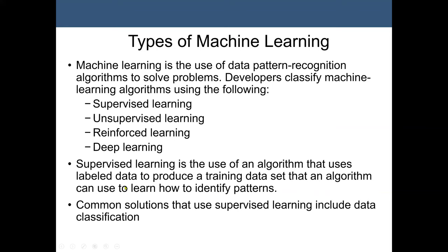Supervised learning is the use of an algorithm that uses labeled data. We have a training dataset that contains all the attribute values and the target variable — for example, whether patients have disease A, yes or no. Supervised learning uses labeled data to produce a training dataset that the algorithm can use to learn how to identify patterns. The most common solution that uses supervised learning is data classification.